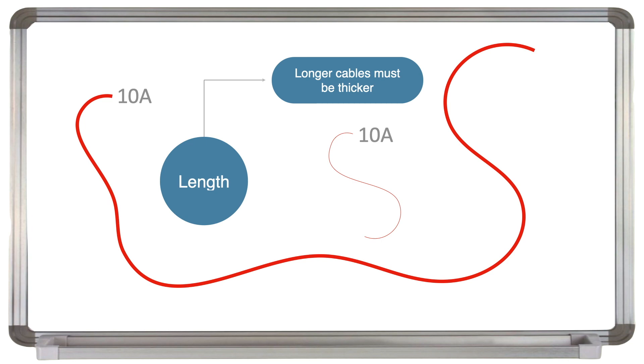So longer cables must be thicker. The two cables on the board here are both carrying 10 amps, but the shorter cable can be thinner than the longer cable and still have the same volt drop.